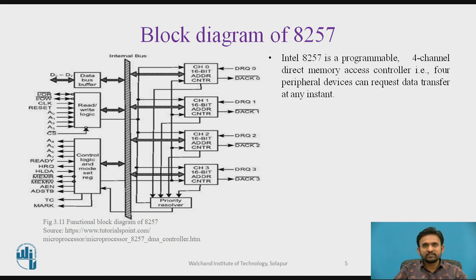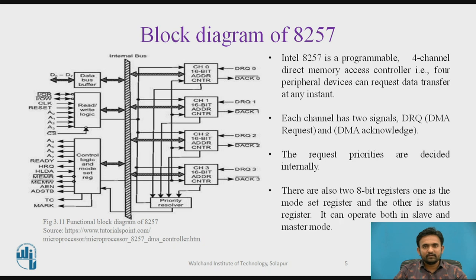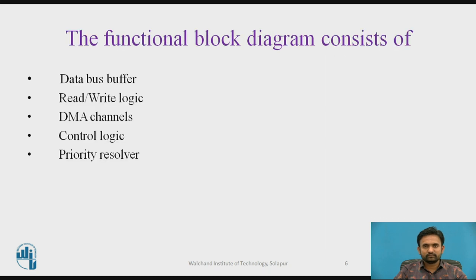Intel 8257 is a programmable 4-channel Direct Memory Access Controller, meaning 4 peripheral devices can request data transfer at any instant. Each channel has two signals: a request signal and a request acknowledge, that is DMA request and DMA acknowledgement. The request priorities are decided internally and there are also 8-bit registers: a mode set register and a status register. It can operate in both slave and master mode. The functional block diagram consists of: data bus buffer, read-write logic, DMA channels, control logic, and priority resolver.